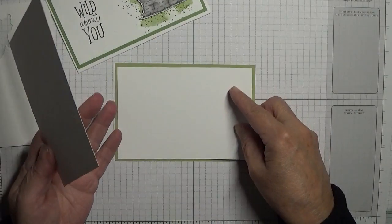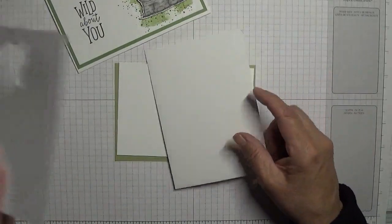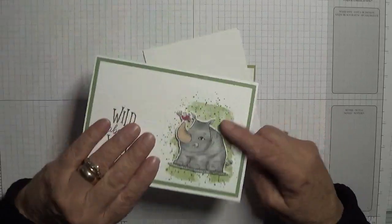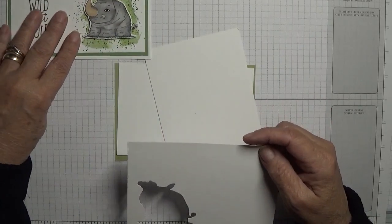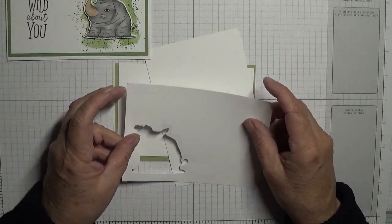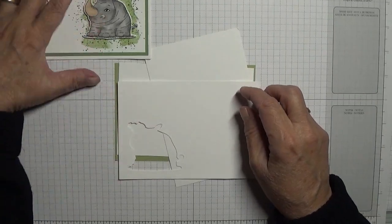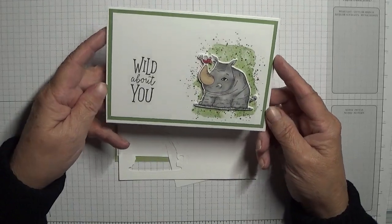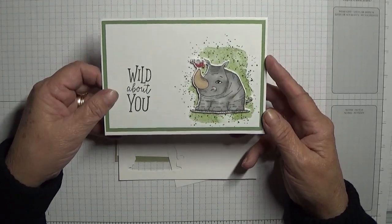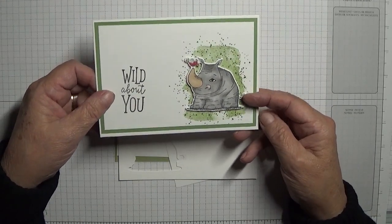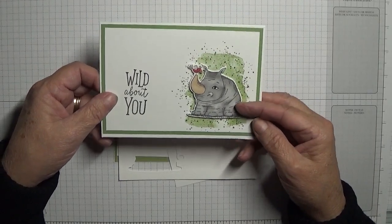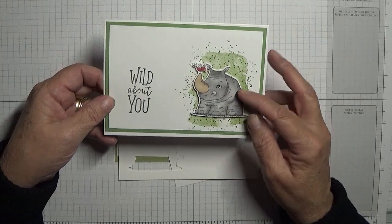You also need some scrap of whisper white for the rhino. This week what I'm going to be doing is I picked three stamp sets of the new current catalog that I like best, and each day Monday, Wednesday, and Friday I'm going to be making a card with them.